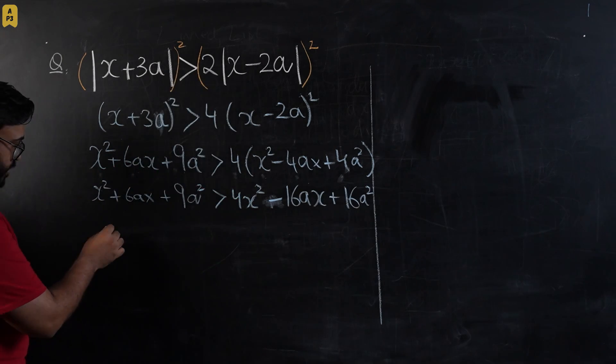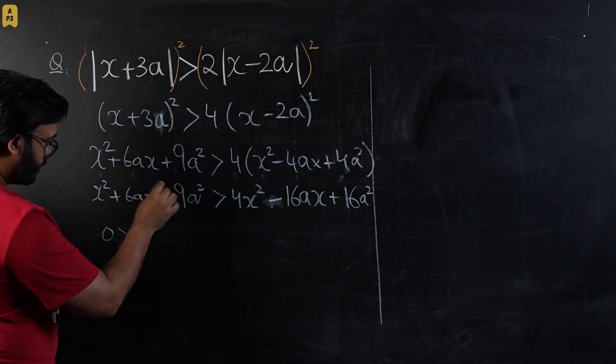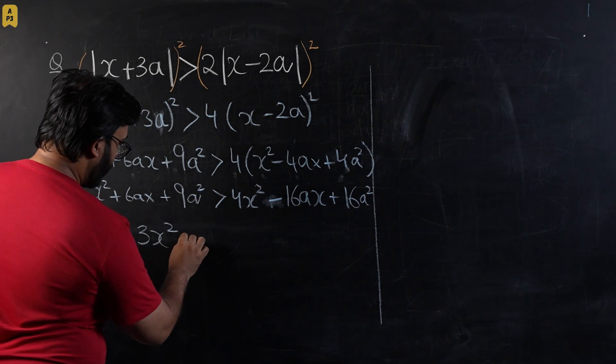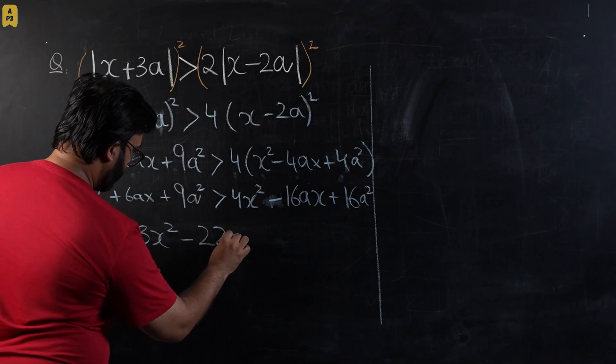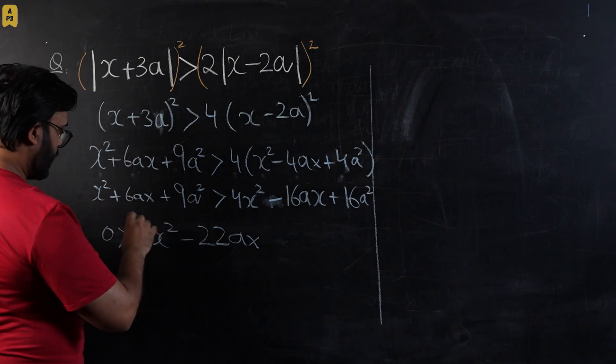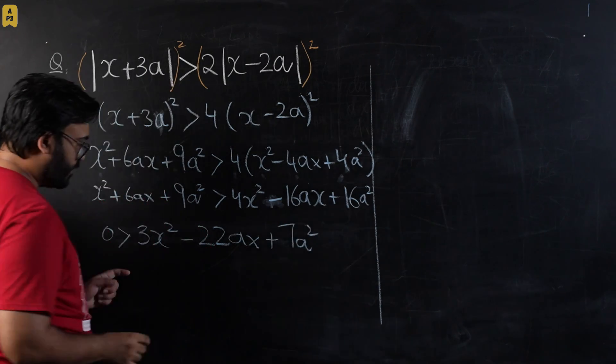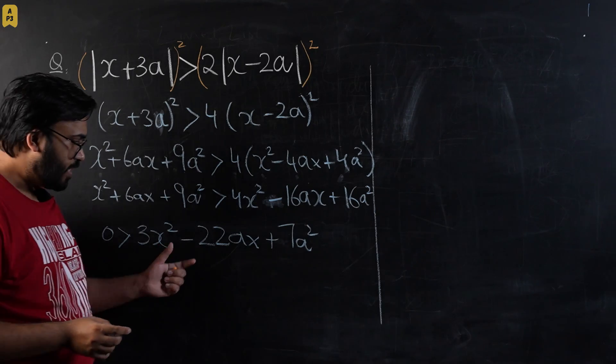Now for the next step we're going to bring everything to the right hand side. We're going to write 3x² - 22ax + 7a². Now this is a quadratic inequality.